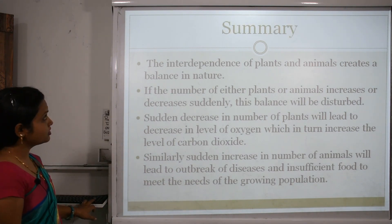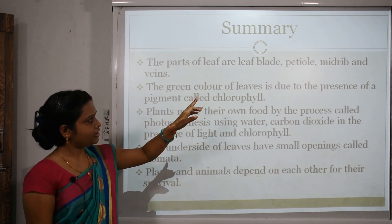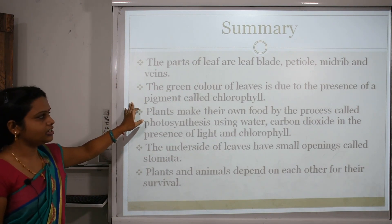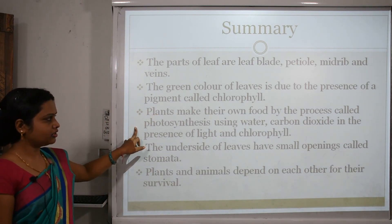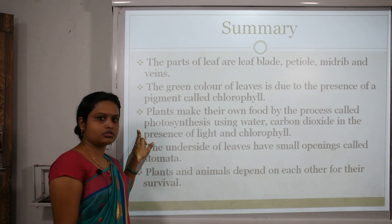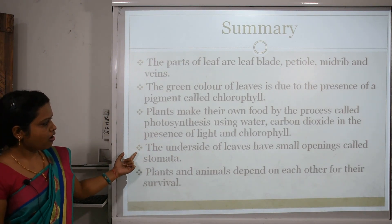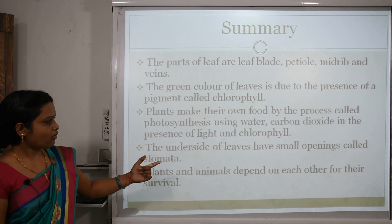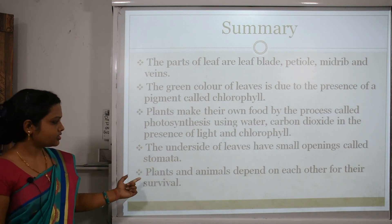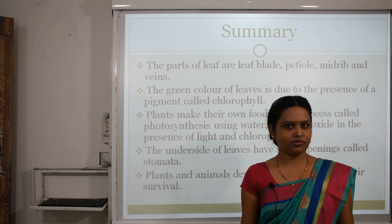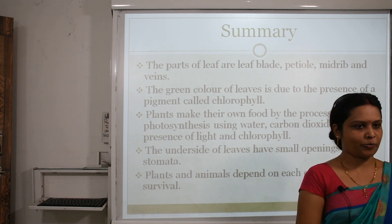Summary: the parts of a leaf are leaf blade, petiole, midrib, and veins. The green colour of leaves is due to the presence of a pigment called chlorophyll. Plants make their own food by the process called photosynthesis using water and carbon dioxide in the presence of light and chlorophyll. The underside of leaves has small openings called stomata. Plants and animals depend on each other for their survival. Thank you children for watching my video. Stay home, stay safe, and revise this lesson at home. Thank you.